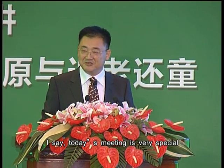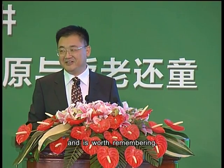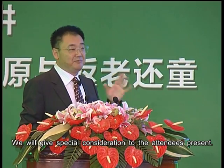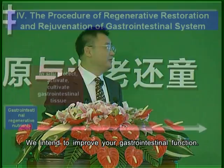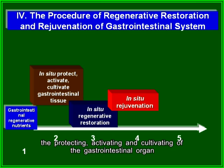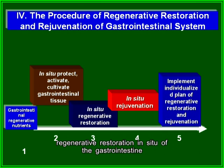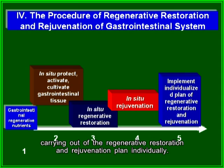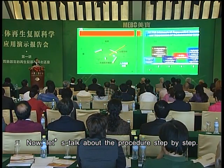Today's meeting is very special and worth remembering. We will give special consideration to the attendees present. The procedure to implement regenerative restoration and rejuvenation of gastrointestinal organs involves: obtaining a regenerative substance, protecting, activating, and cultivating it, regenerative restoration in situ of the gastrointestines, rejuvenation in situ, and then carrying out the regenerative restoration and rejuvenation plan individually.